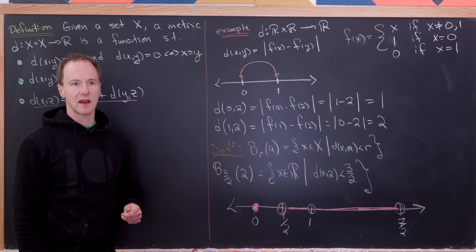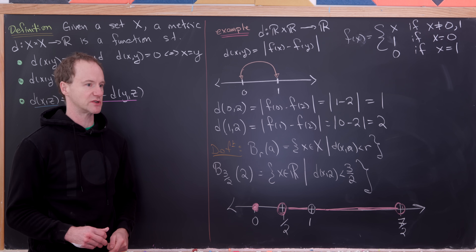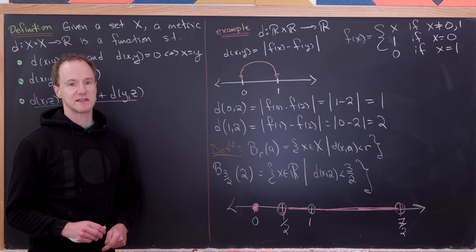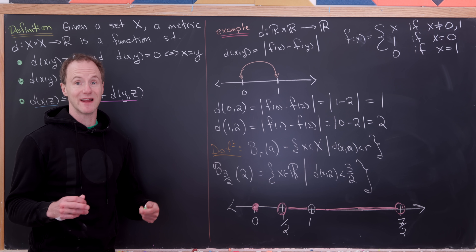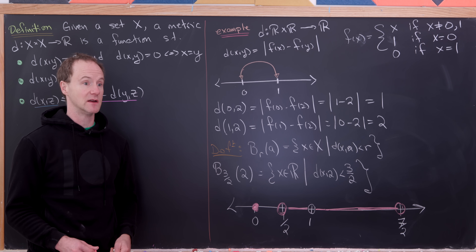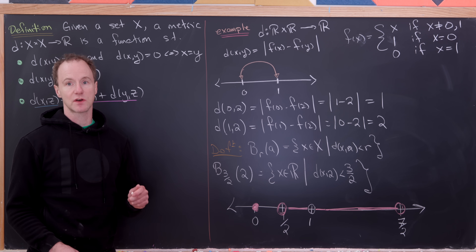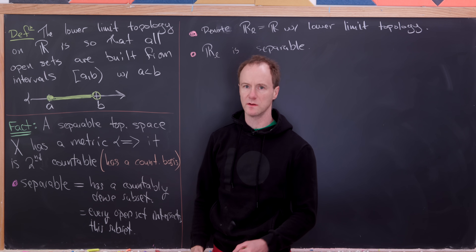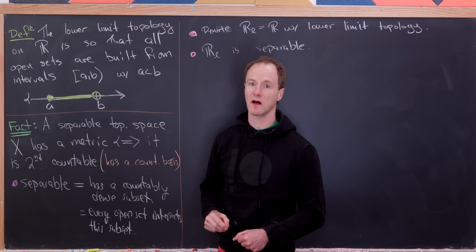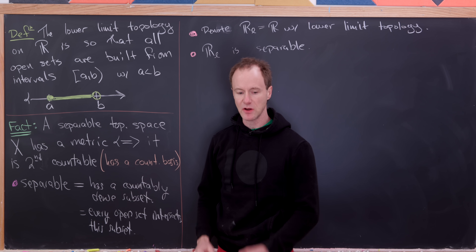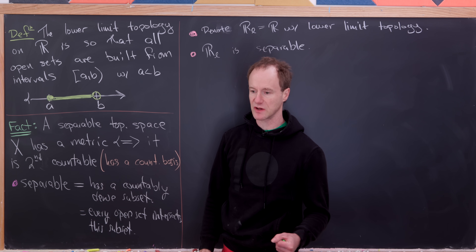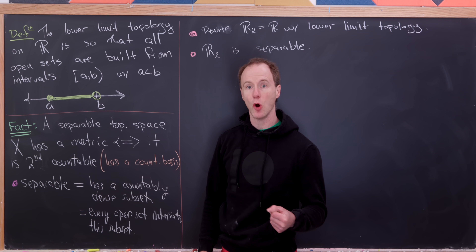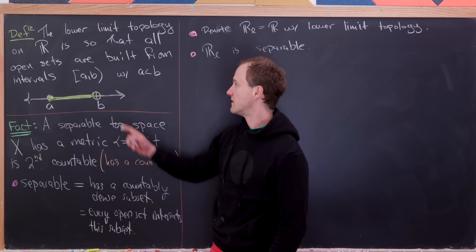We've just seen that distances can be defined in a strange way even on the real numbers, which seems like it would be a fairly simple set. In fact, there's a structure on the real numbers where it's impossible to define the notion of distance at all. Let's look at that.